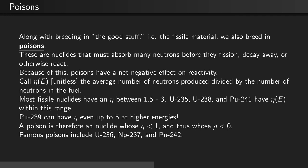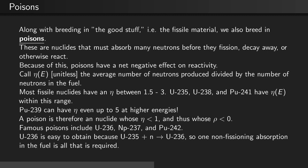Famous neutron poisons include uranium-236, neptunium-237, and plutonium-242. Uranium-236 is rather easy to obtain because uranium-235 plus a neutron becomes uranium-236. So one non-fissioning absorption reaction is all that is required.